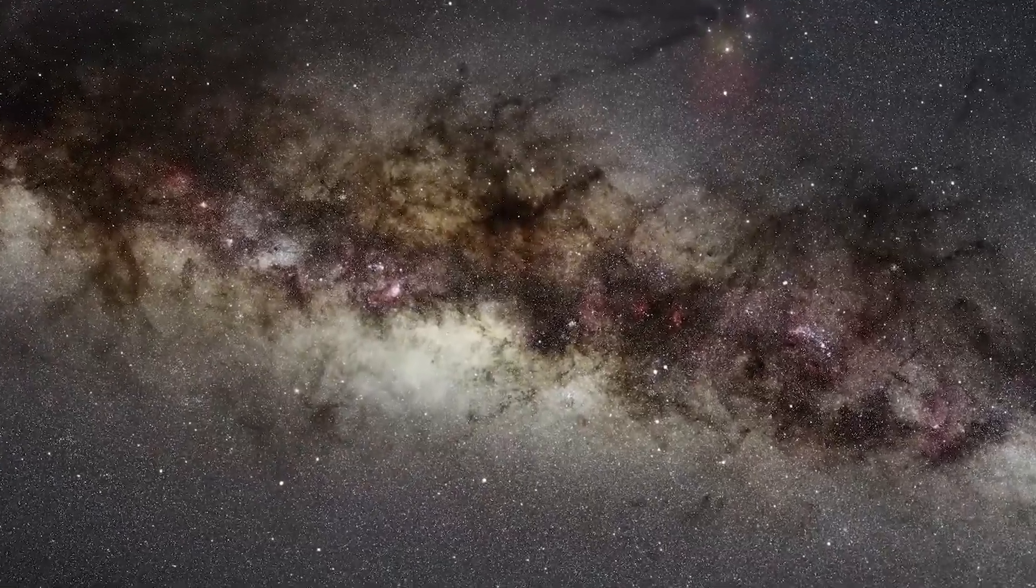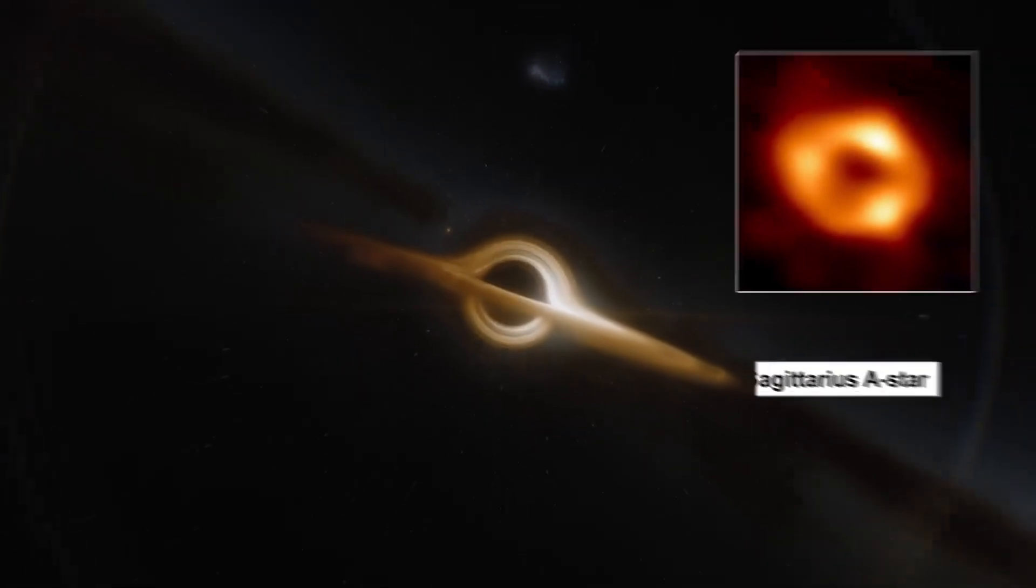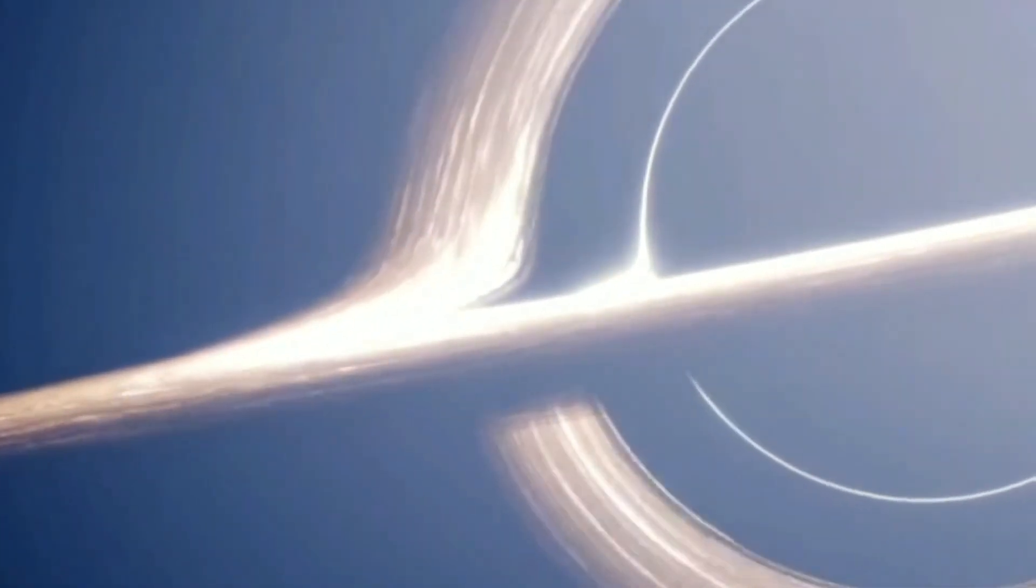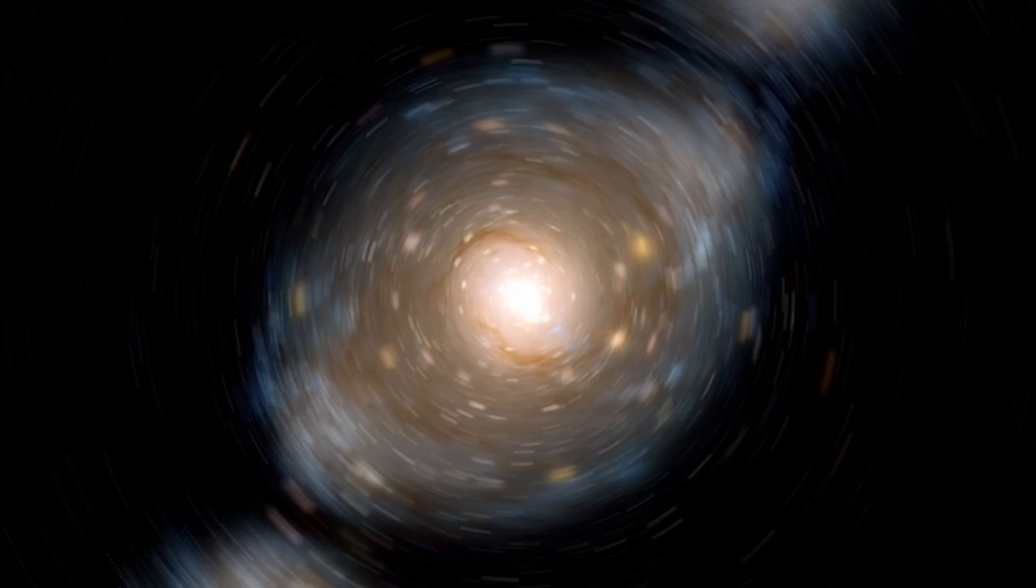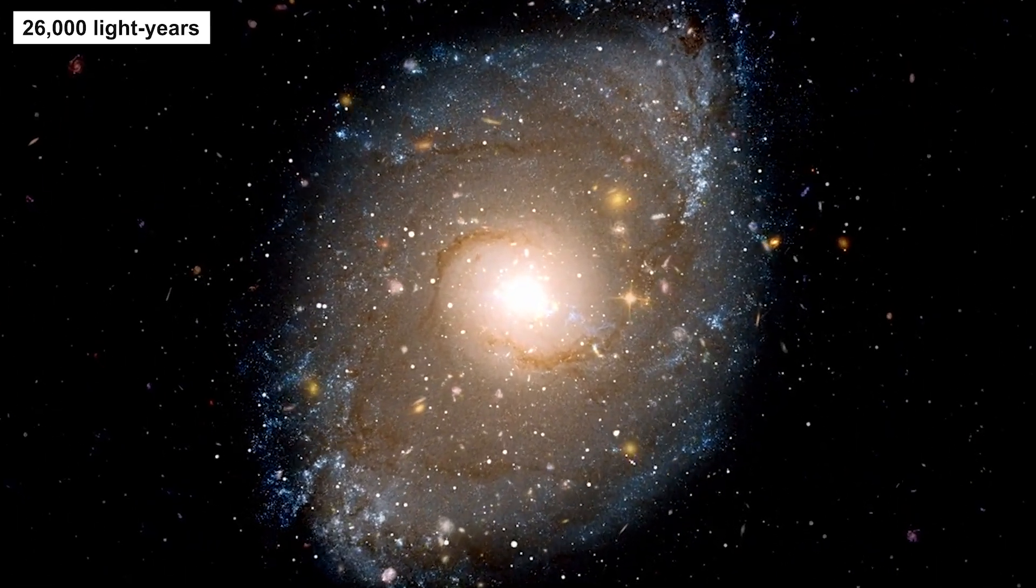Deep inside our Milky Way galaxy there lies a cosmic giant known as Sagittarius A-star. It's a supermassive black hole sitting quietly at the very center of our galaxy, about 26,000 light years away from Earth.